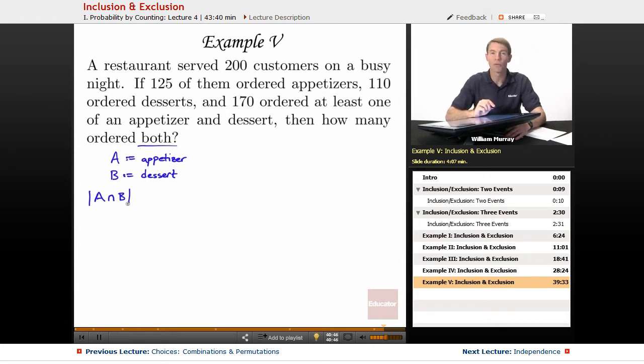Now, our original rule for inclusion-exclusion on two events, if you go back and look at it, the very first slide in this lecture, we had the formula A intersect B. The number of things in A intersect B is the number of things in A plus the number of things in B minus the number of things in the union.